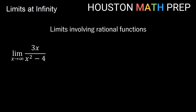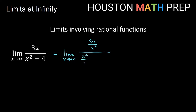Let's look at some limits involving rational functions, thinking of it in terms of a number over something really large getting close to 0. Here I have the limit as x approaches infinity of 3x over x squared minus 4. We're going to use a technique where we divide by the highest power in the denominator. My highest power of x in the denominator is x squared, so I'm going to divide everything by x squared.